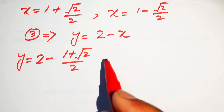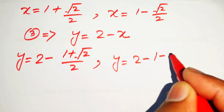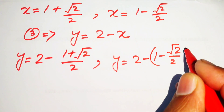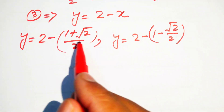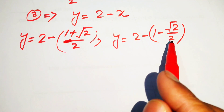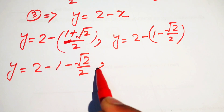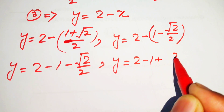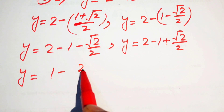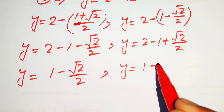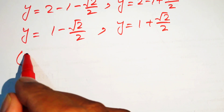For x equals 1 plus square root of 2 over 2, we get y equals 2 minus (1 plus square root of 2 over 2). Distributing the negative sign and simplifying gives y equals 1 minus square root of 2 divided by 2. Similarly, for x equals 1 minus square root of 2 over 2, we get y equals 1 plus square root of 2 divided by 2.